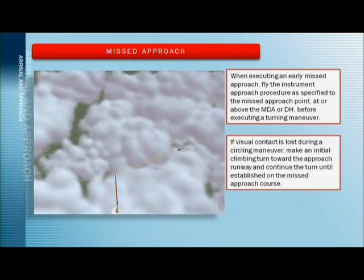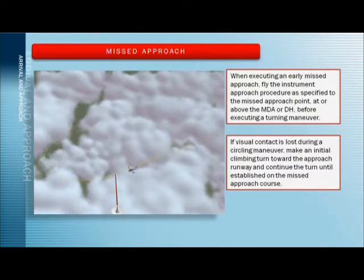Now let's say you are circling to land and visual contact is lost. How do you fly the missed approach then? You make an initial climbing turn towards the approach runway and continue the turn until you are established on the missed approach course.